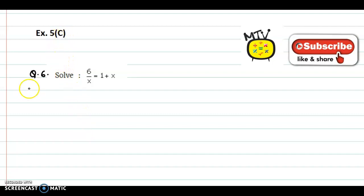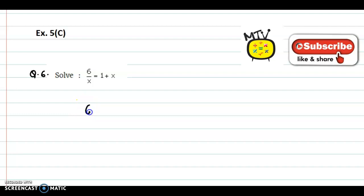Now, we discuss question 6 of XS5C. The equation is 6 upon X is equal to 1 plus X. So we just write down the equation: 6 by X is equal to 1 plus X.